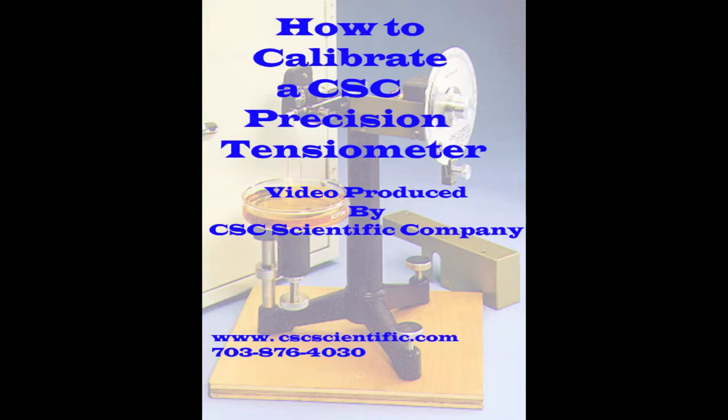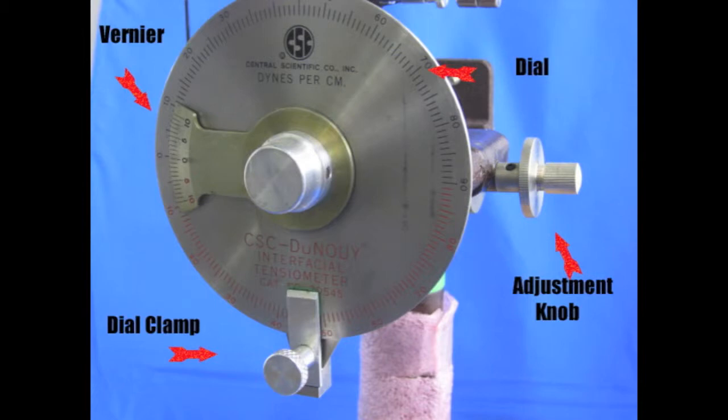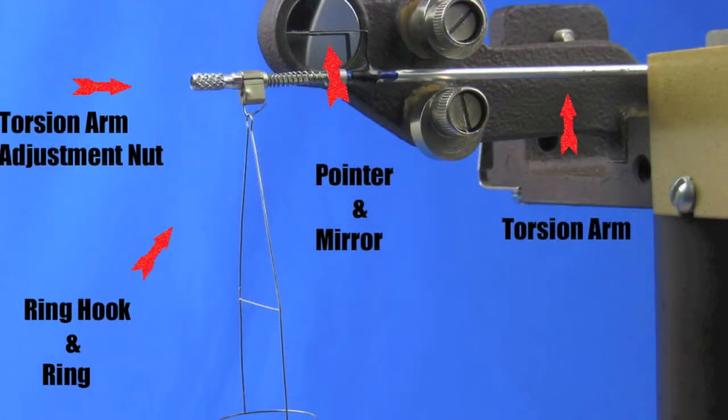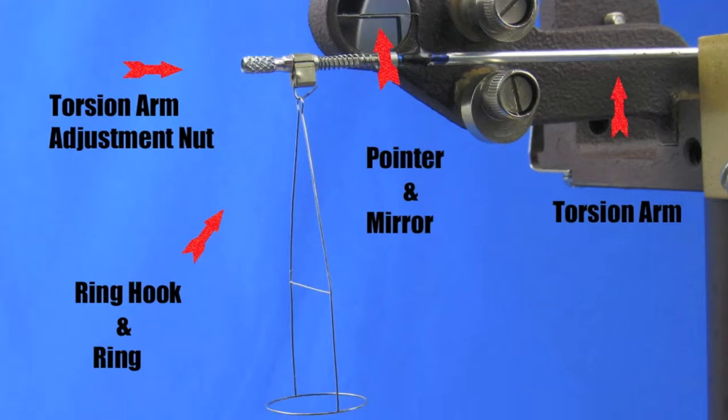Our first task is to identify the key components of the tensiometer. They are, as indicated by the arrows: the dial clamp, the adjustment knob, the vernier, the torsion arm, the mirror line and arm pointer, the ring hook and the ring, and the torsion arm adjustment nut. You start the process by attaching the ring to the ring hook.